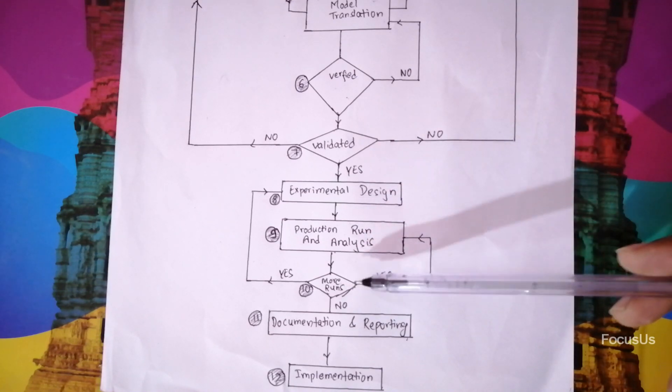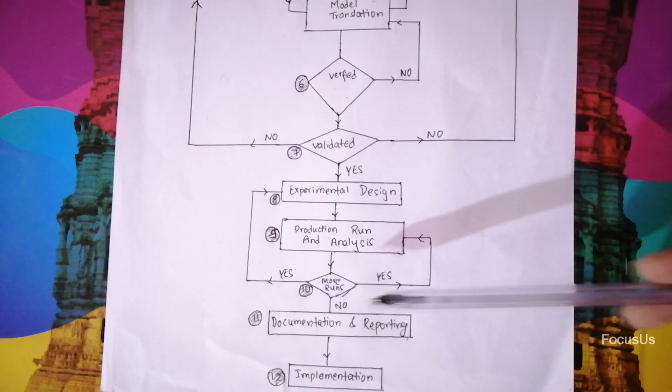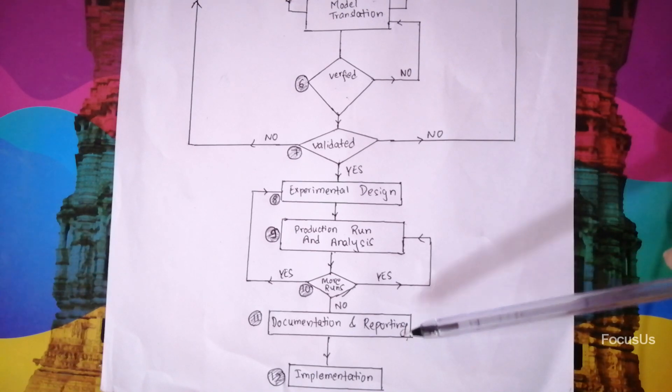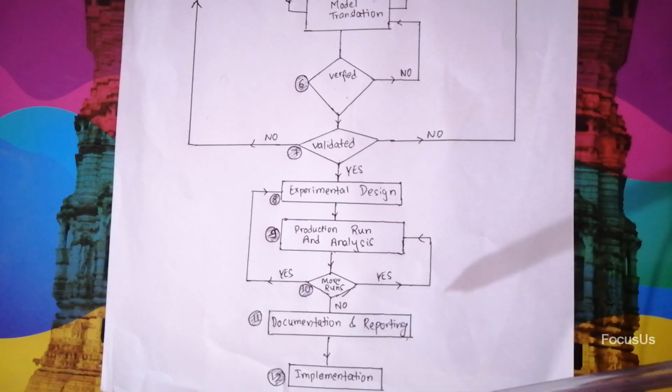Documentation and reporting is just the written report over the system you have just created. It will have all the details about the simulation we have just created. And lastly in number 12 we have the final step which is implementation. Finally the system we have created through this simulation is implemented in the real world.